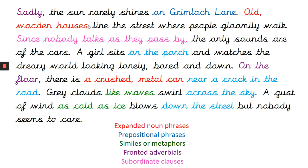Let's see if you got it right. Starting with expanded noun phrases - the words highlighted in red. 'Old wooden houses' - I've got my two adjectives with a comma in between to describe the noun. Then 'a crushed metal can' - crushed and metal are my adjectives with a comma between them. For prepositional phrases, I've got lots: on Grimlock Lane, passing by, on the porch, near a crack in the road, across the sky, down the street - all telling me where things are happening.